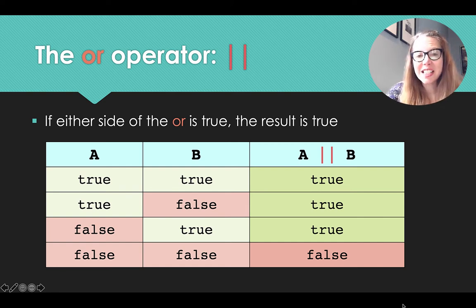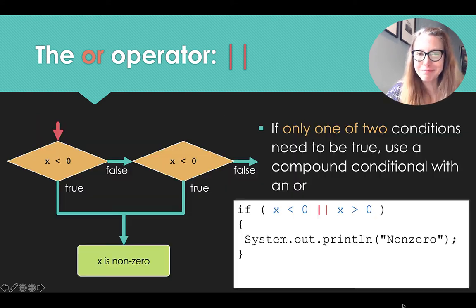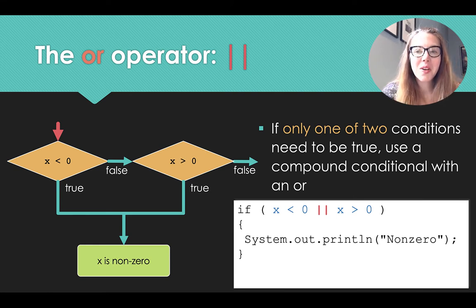So for instance, if we want to wear a coat if it's raining outside or if it's cold, then we could check, is it rainy or cold? And if either is true, we'd want to put a coat on our coat. A coat of some kind, at any rate.